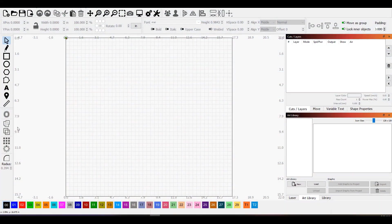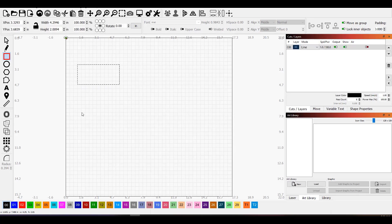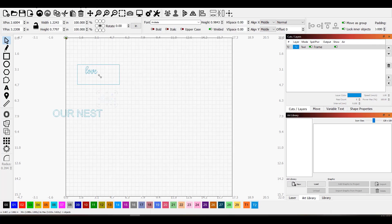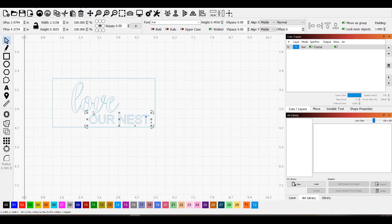I created a box in Lightburn the same size as the scrap wood I was using and converted it to a tool layer. I added the words and then changed the fonts. I lined the words up the way I wanted them to appear on the wood and converted the layer to a cut layer.